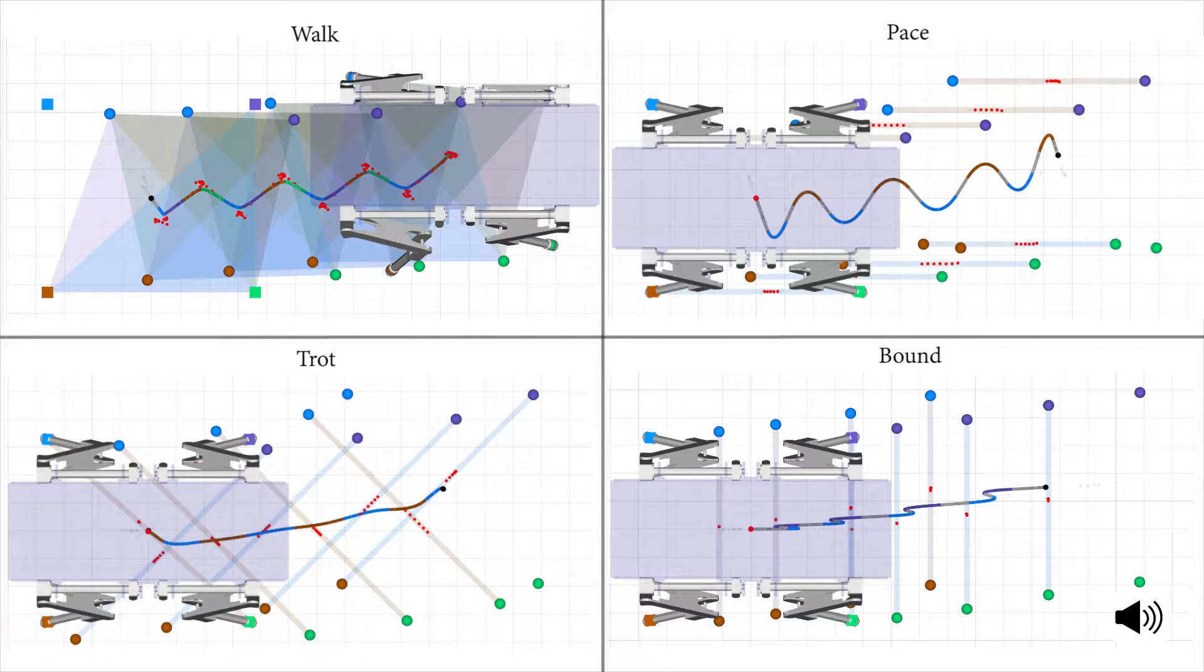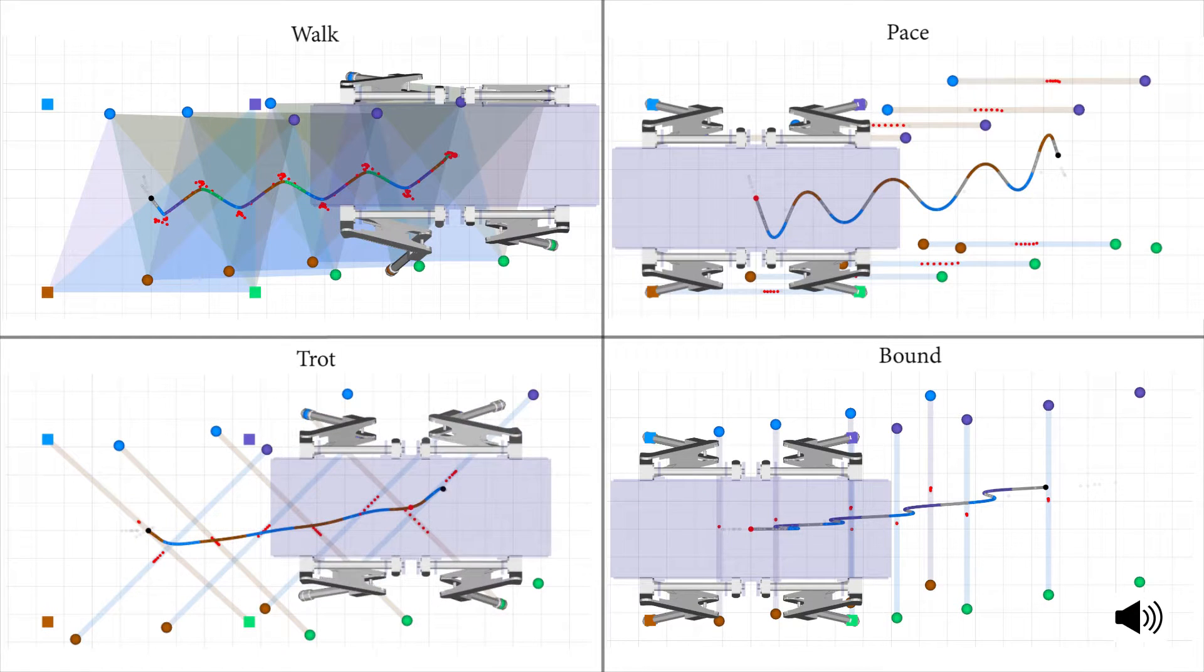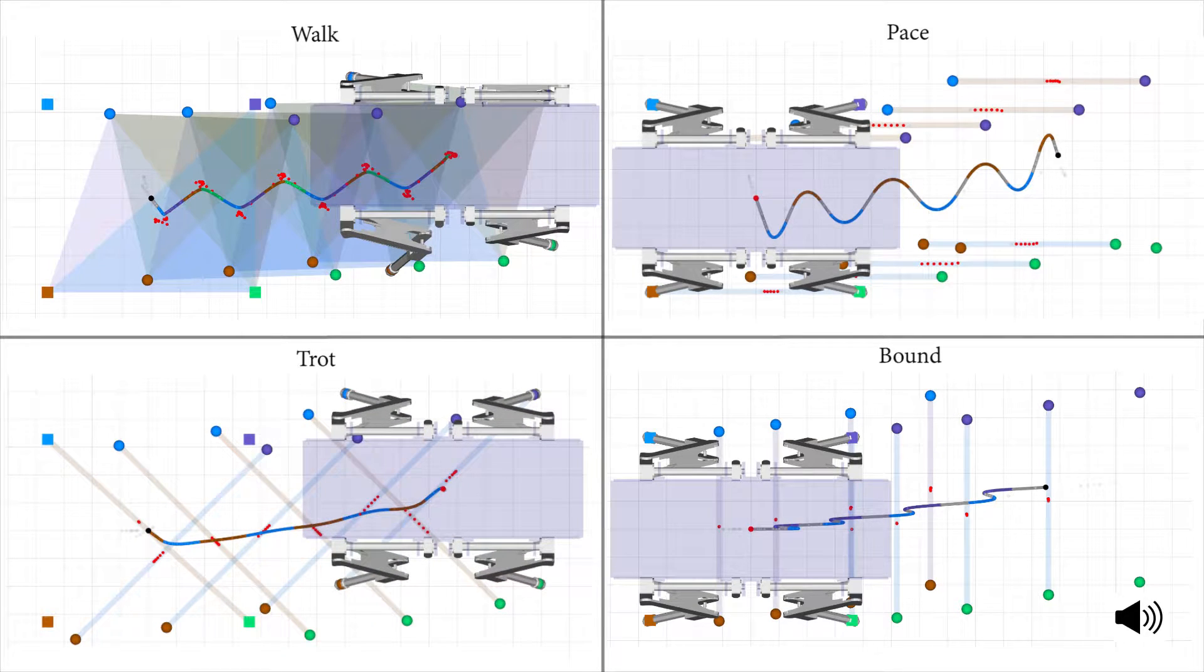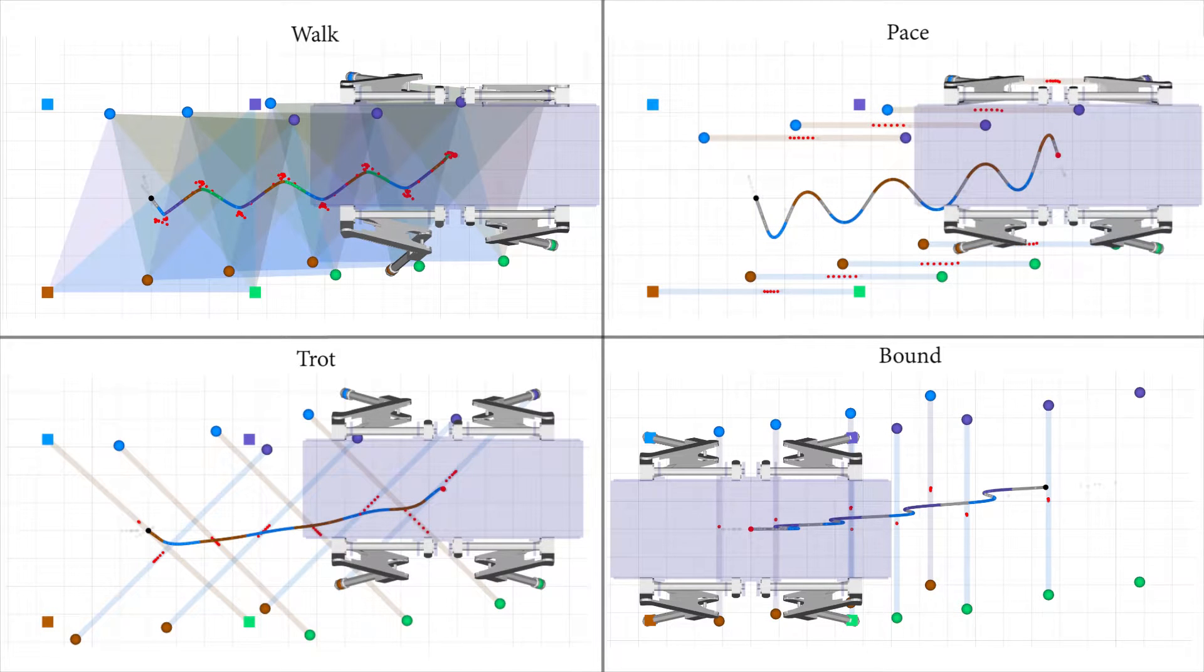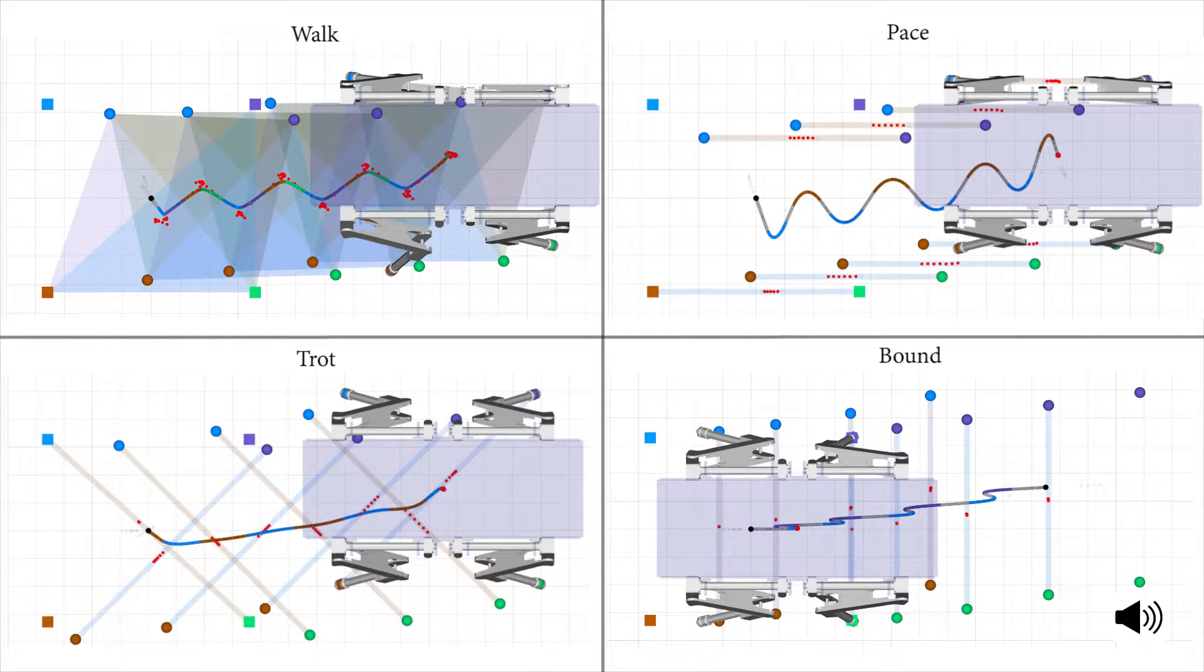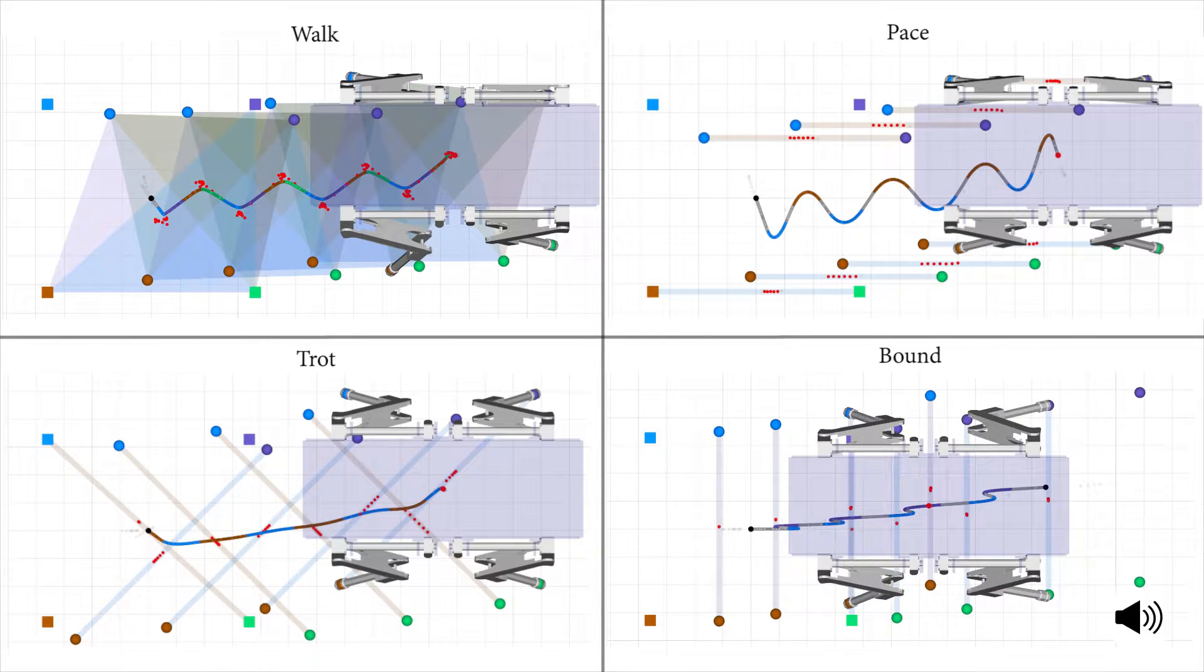The quantity that causes the movement of the body is the position of the center of pressure, shown by the red dots. Physically, it is only possible to generate a center of pressure inside the convex set of the stance feet. These convex areas are the transparent patches.